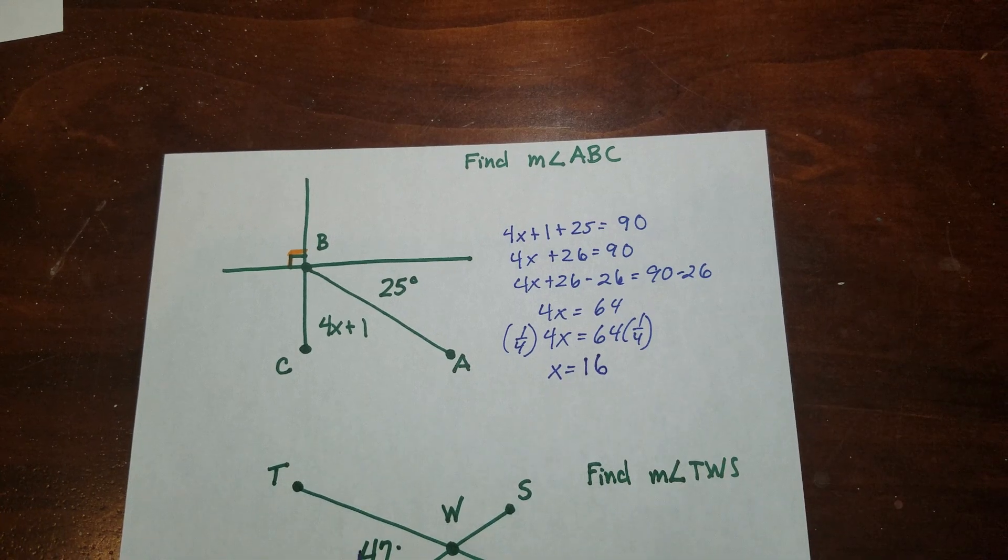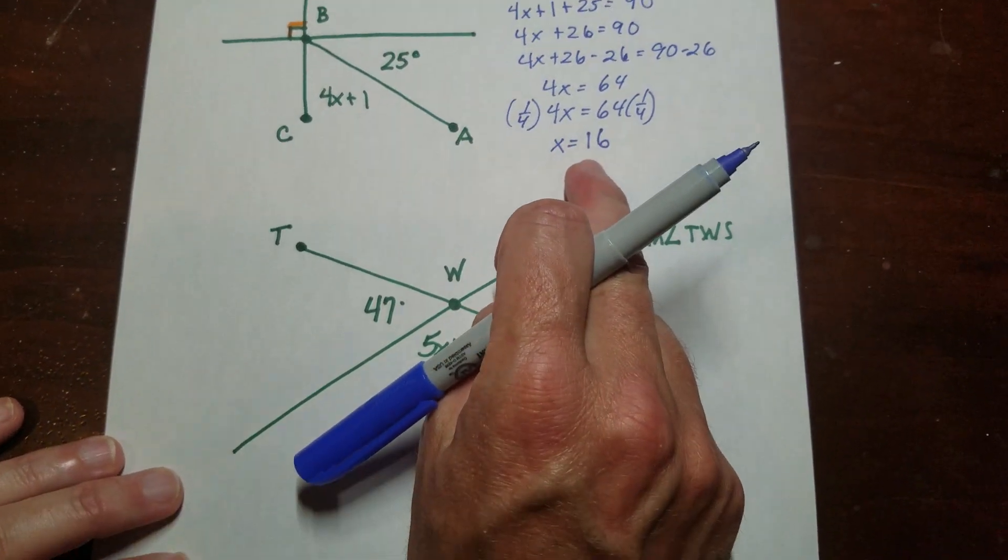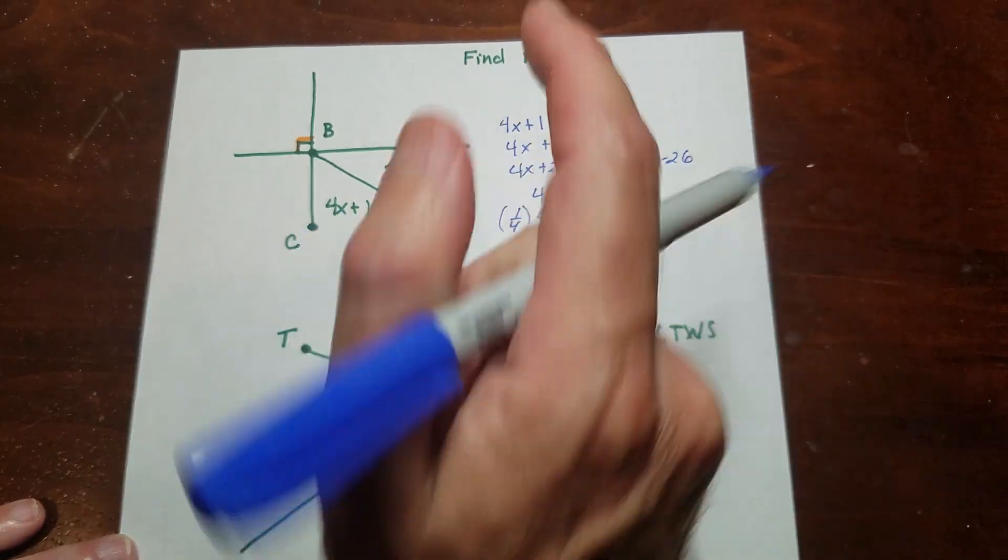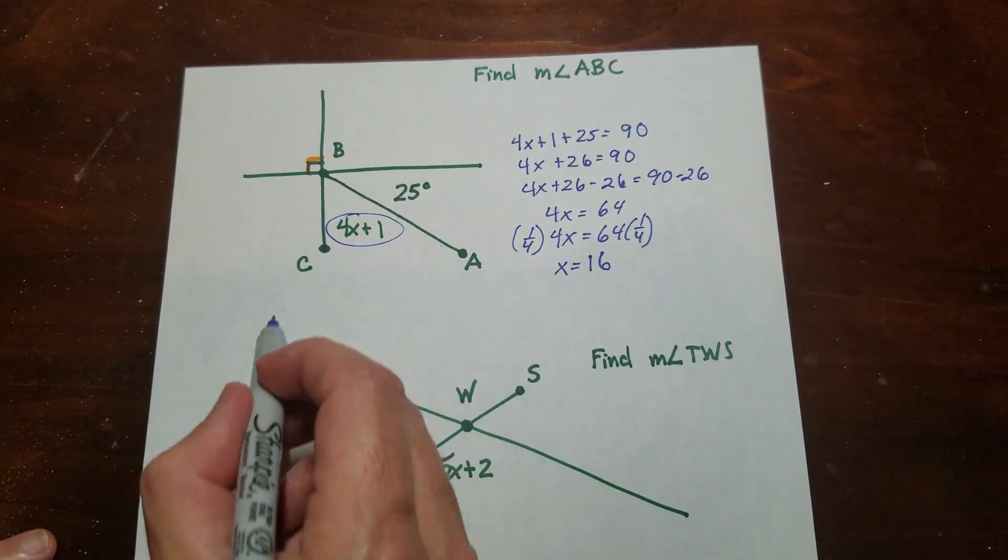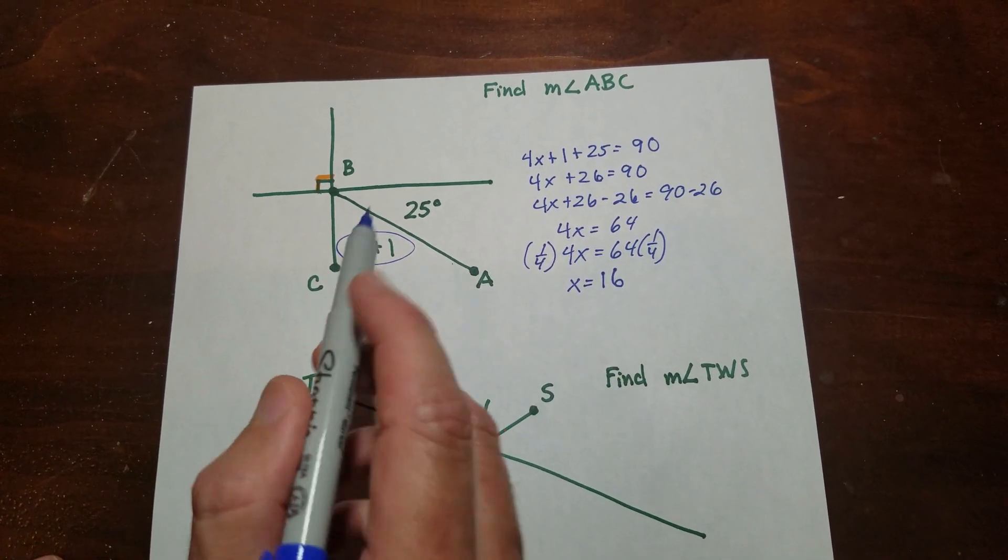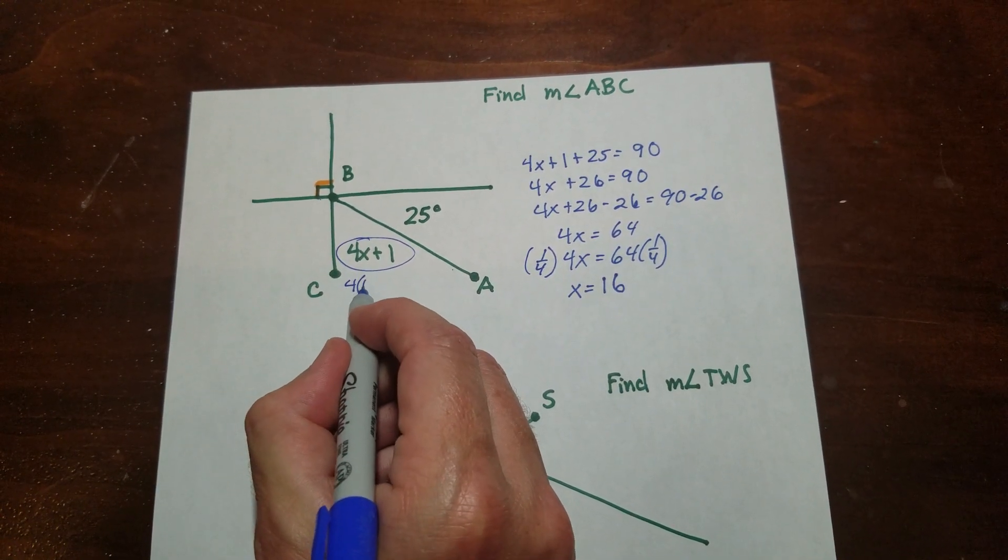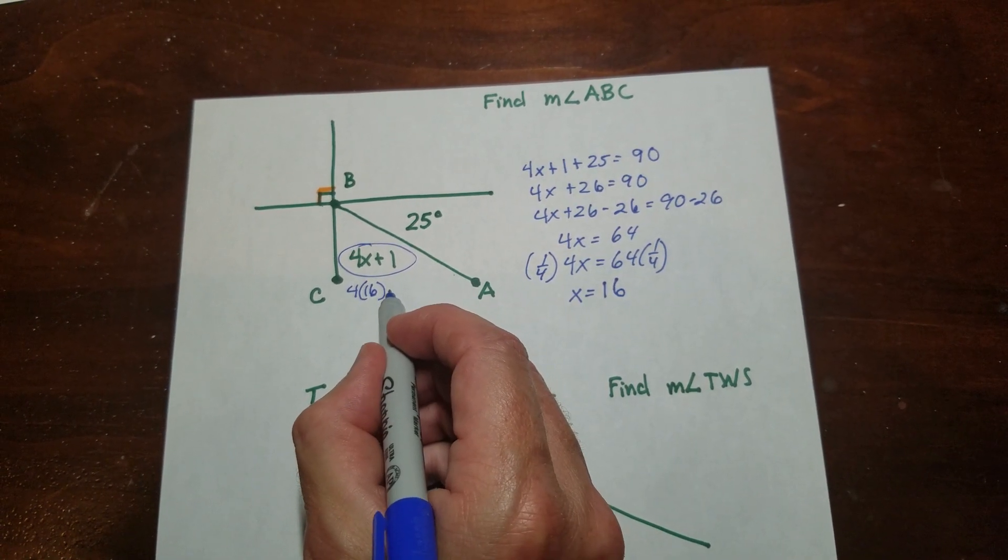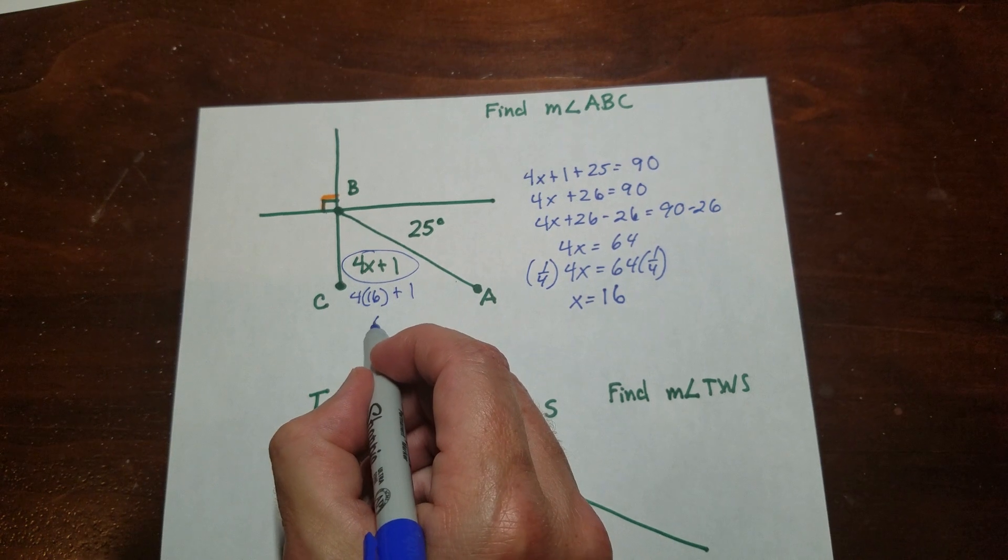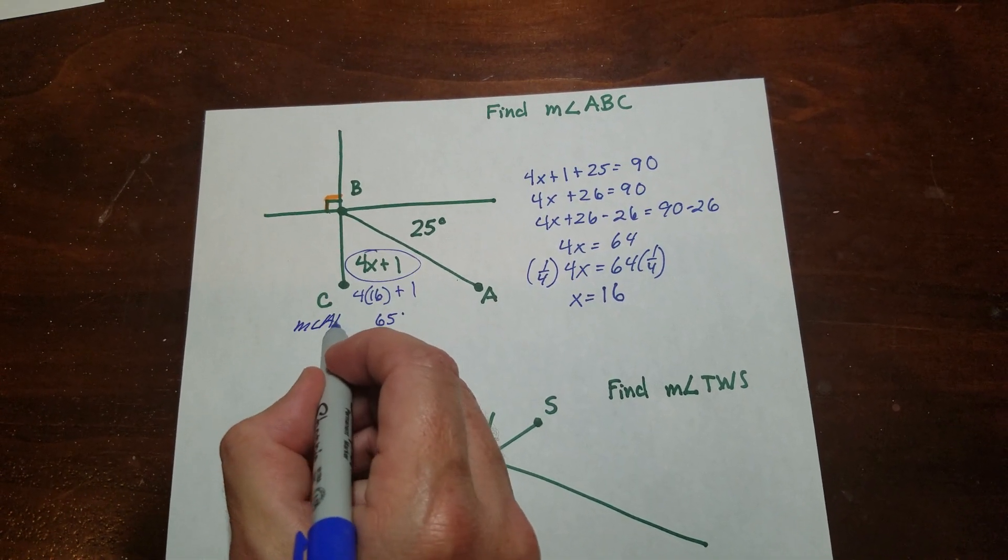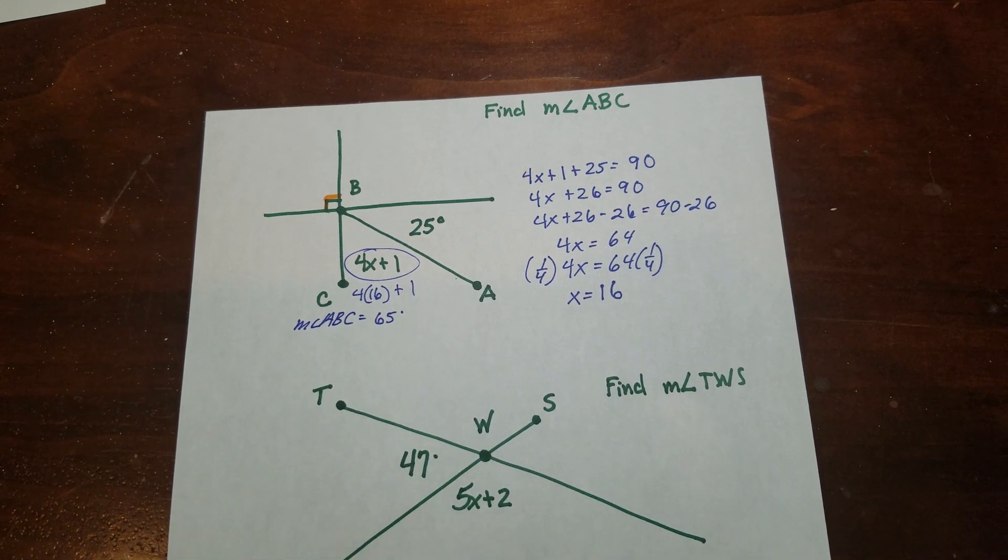Okay, so x is 16. Now, this is different than the last problem. This is telling me to find the measure of angle ABC, which is ABC. It's this guy right here. So that means I have to not only find x, but I have to plug it in to figure out what this is. So if I plug in 16 here, we already know 16 times 4 is 64. So that's 65 degrees. So I know that the measure of angle ABC is equal to 65 degrees.